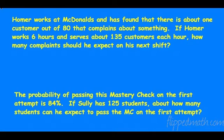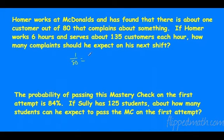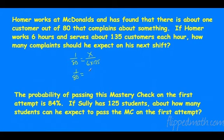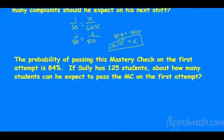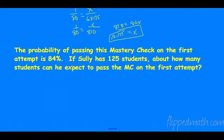Homer works at McDonald's and has found that about one customer out of 80 complains about something. If Homer works six hours and serves about 135 customers each hour, how many complaints should he expect? The total number of people he serves is 6 times 135, which is 810. Cross multiply: 810 equals 80x, divide that out, and x is about 10.125 customers — so he should expect about 10 people to complain.